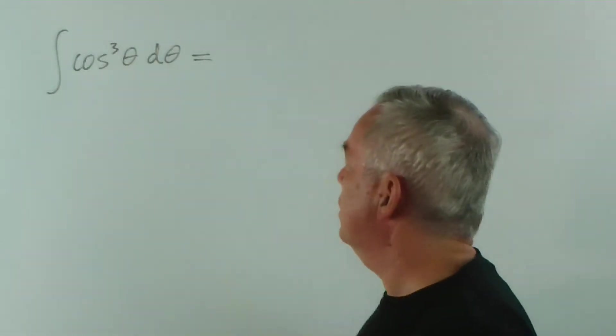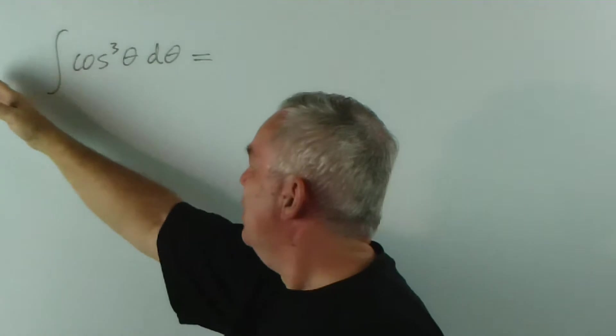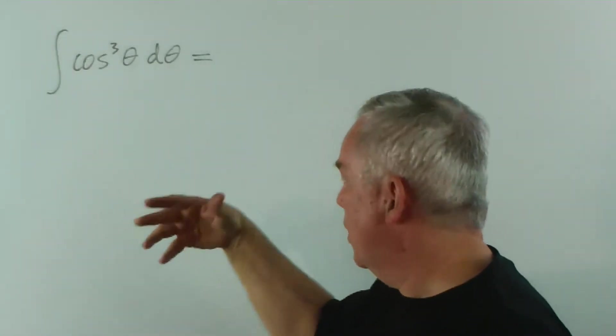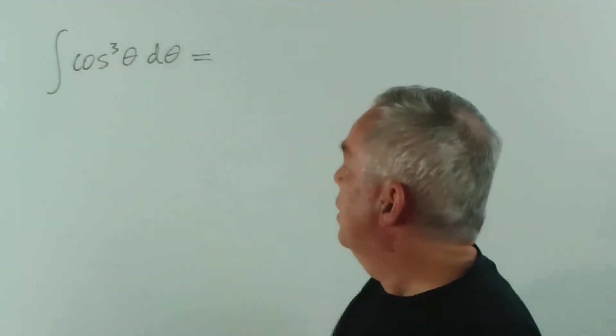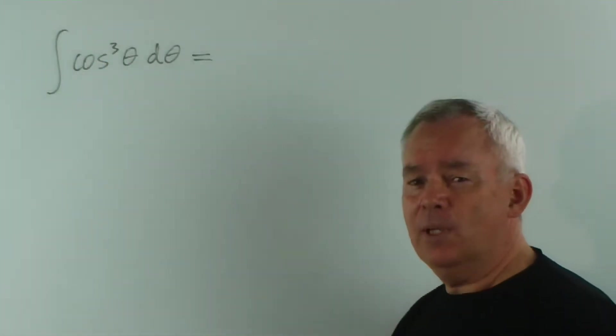We have a power of cos θ. Nothing above or below it to indicate that we might get a logarithm or that we've got a derivative of cos out the front. This, potentially, is a more complicated one.